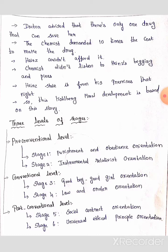Heinz begged and pleaded, saying his wife was in a very critical situation. The druggist did not listen to Heinz's begging and pleas. Heinz was very upset because he didn't have the money.